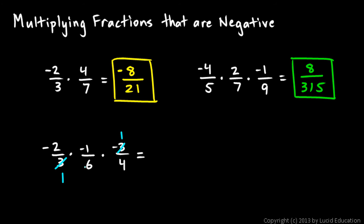And this 2, you can take the 2 and the 6 or the 2 and the 4, either way. If I reduce the 2 and the 6, I divide them both by 2, I get a 1 and a 3. So, I have 1 times 1 times 1.